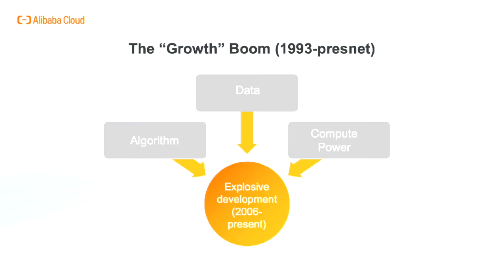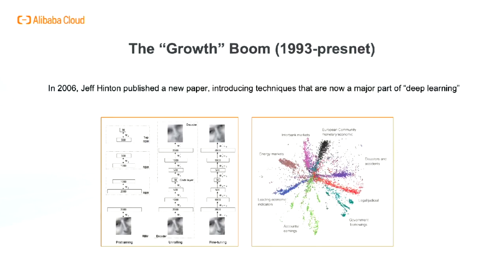Since 2006, artificial intelligence has been developing rapidly, based on algorithms, data, and computing. In 2006, Geoffrey Hinton published a science paper which opened the prelude to deep learning. The paper shows how to use complementary priors to eliminate the explaining-away effects that make inference difficult in densely connected belief nets that have many hidden layers, and introduces the whole system of machine learning, especially the method of restricted Boltzmann machines. It brought neural networks back to people's attention and made it possible to use single-layer RBM self-encoding pre-training to make deep neural network training possible.